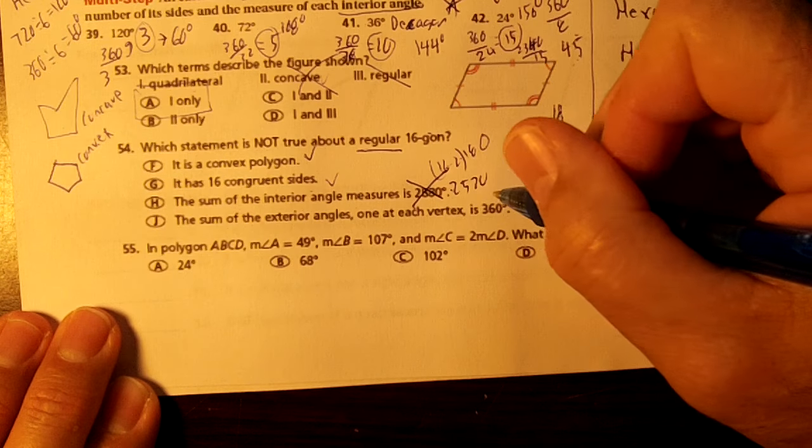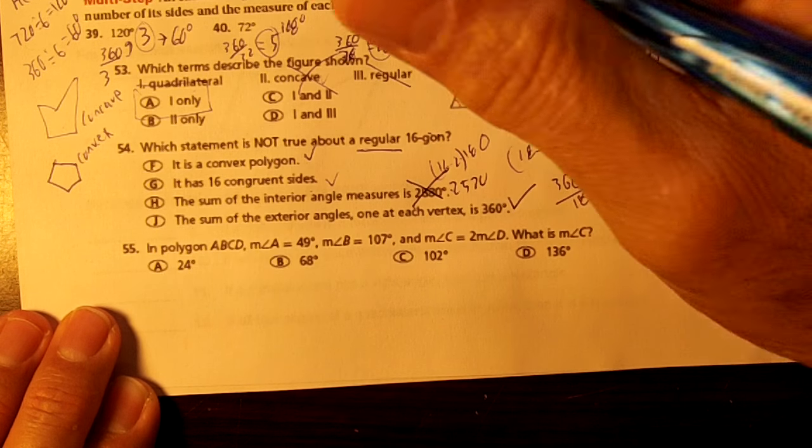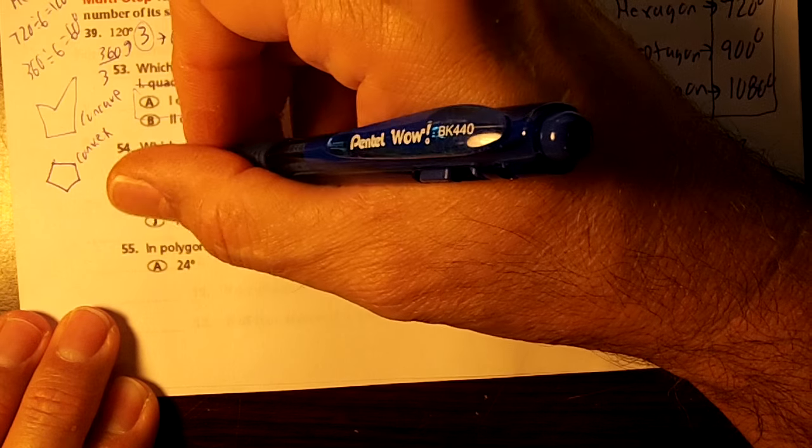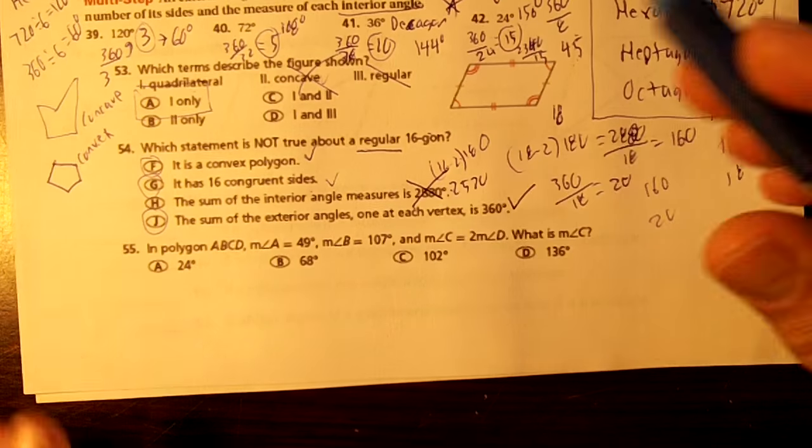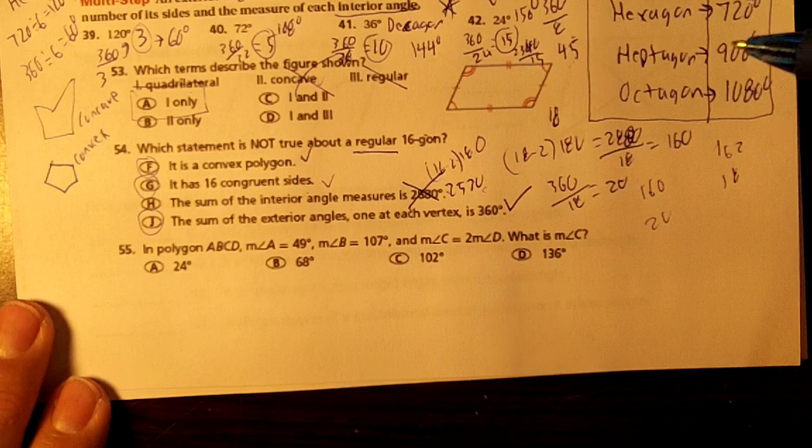The sum of the exterior angles, one at each vertex, is 360. That's correct. So it's F, G, and J are true. This is not true. It's 2520.